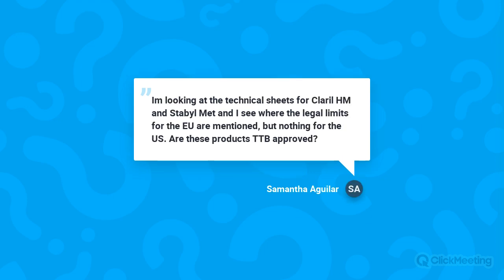Smith Aguilar asks whether Clarol HM and StableMet are TTB approved. Yes, they are TTB approved under the 24-250 designation — approved for domestic use but not for export wines. The legal dosage limit is approximately 80 g/hL, though in practice you'd likely use no more than 50 g/hL, which is well within legal limits.